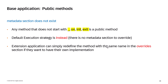In the Fiori freestyle application, public methods depend on the metadata section in the app. If there is no metadata section, then any method that does not start with underscore, onInit, or exit is considered a public method, and the default execution strategy is 'instead'. Extension applications can redefine the method with the same name in the override section.